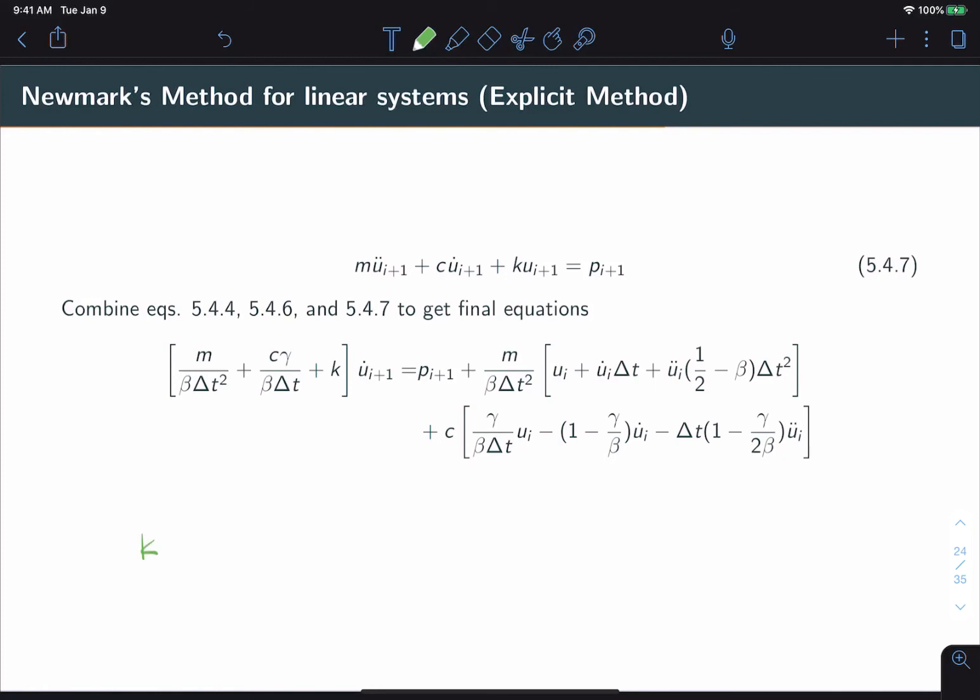The final form we really want is something like k hat times some unknown ui plus one equal to p hat at time i plus one. This p hat can also be written as our force at time i plus one plus some value a1 times ui, which is known, some value a2 times u dot i, which is also known, and some value a3 times u double dot i, which is also known.